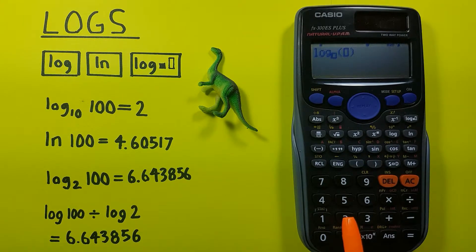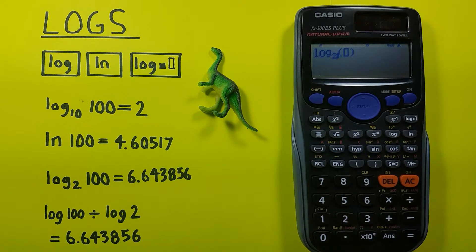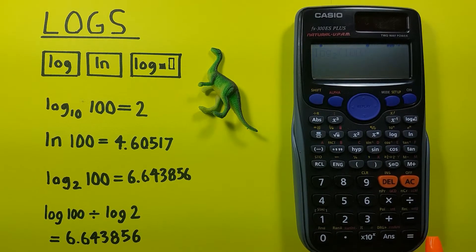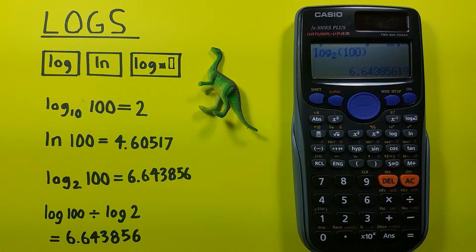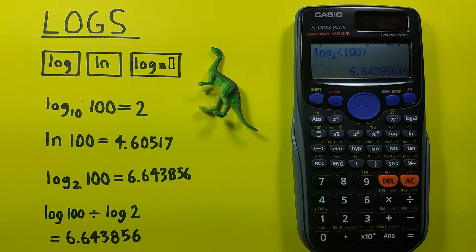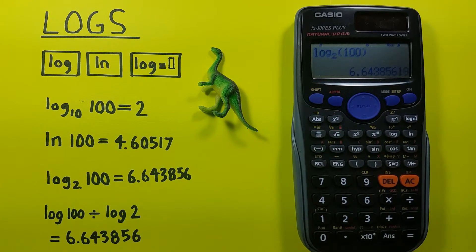And then move our cursor to the right so that it's in the larger box, and then here we enter the 100 and press equals. And we can see that log base 2 of 100 equals 6.64385.